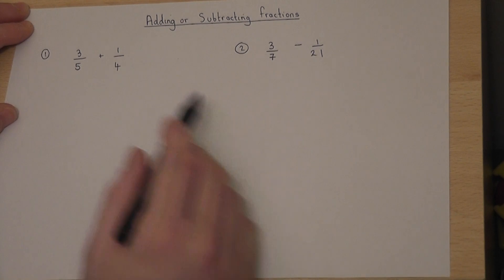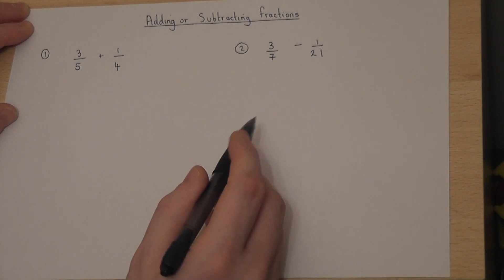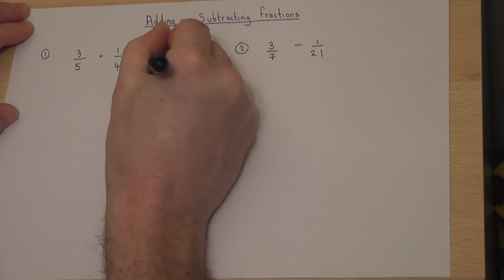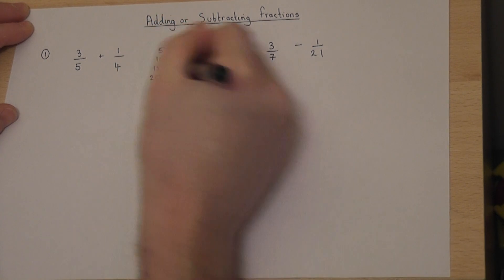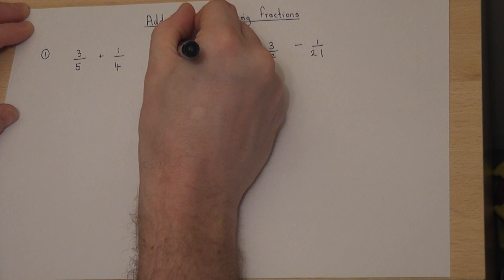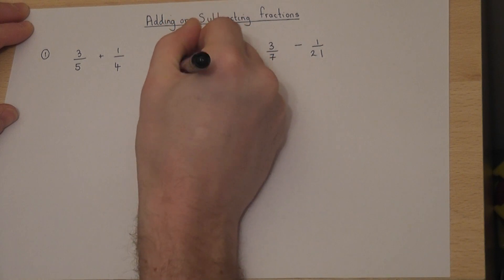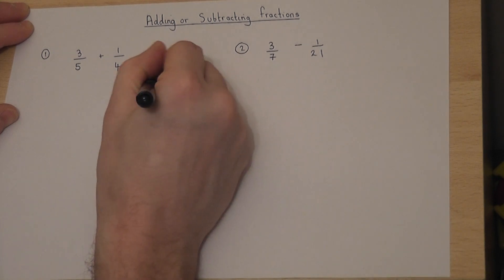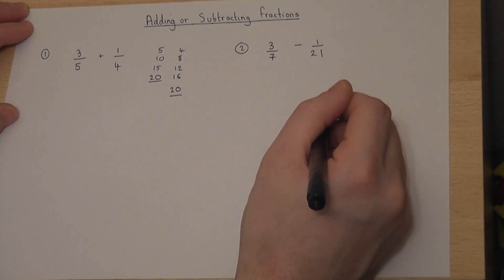If I were to write down the 5 and 4 times tables - so 5, 10, 15, 20, and the 4 times table - you will observe they both overlap for the first time at 20.